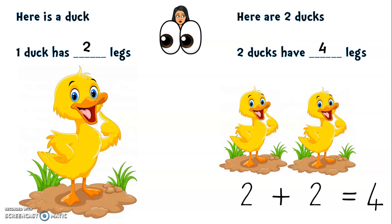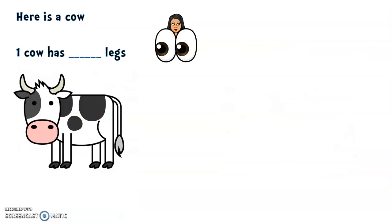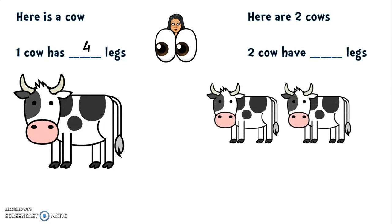So let's try another. Here is a cow. One cow has—let's count those legs—four legs. Well done!